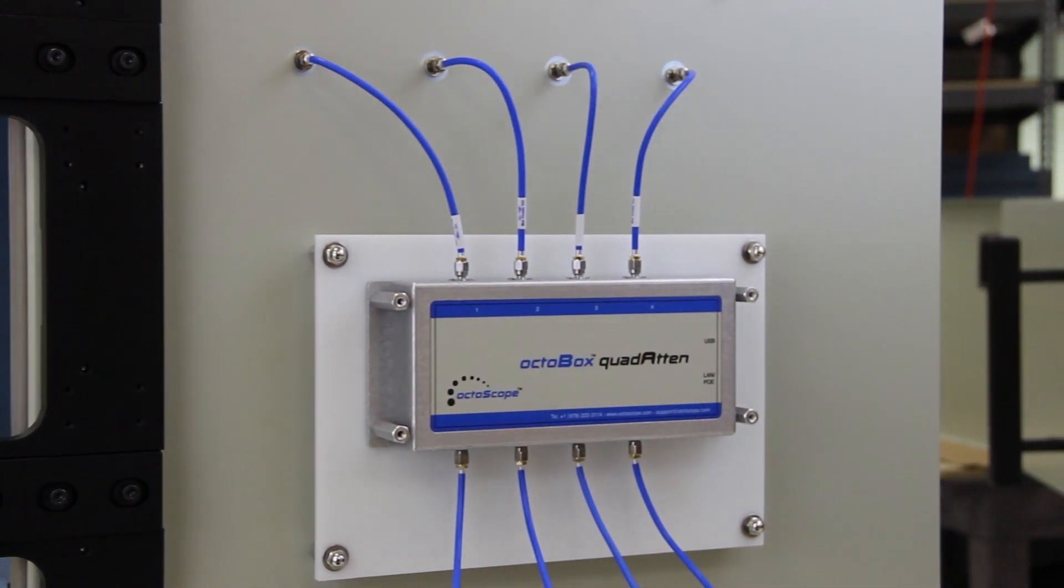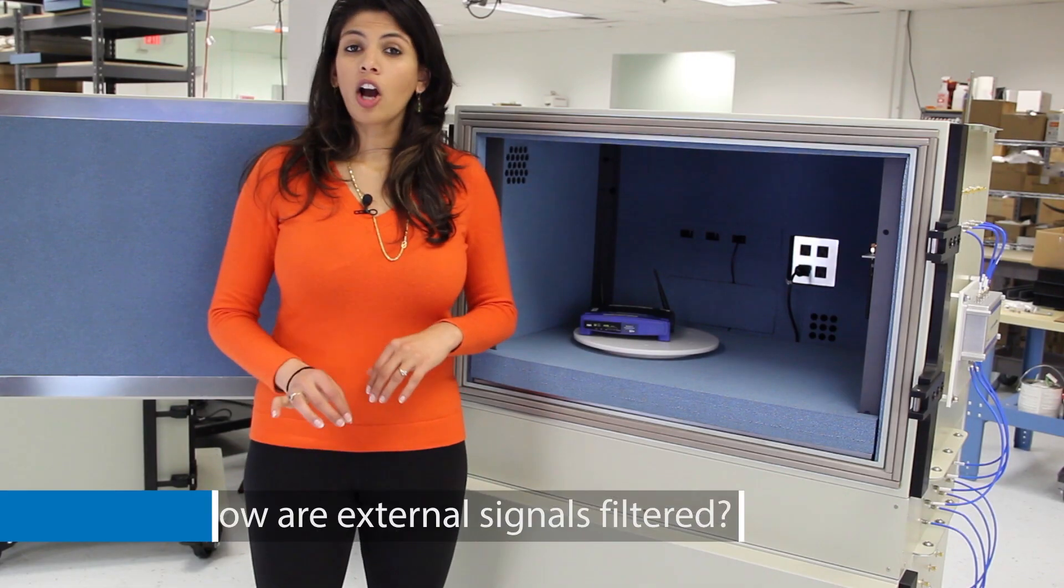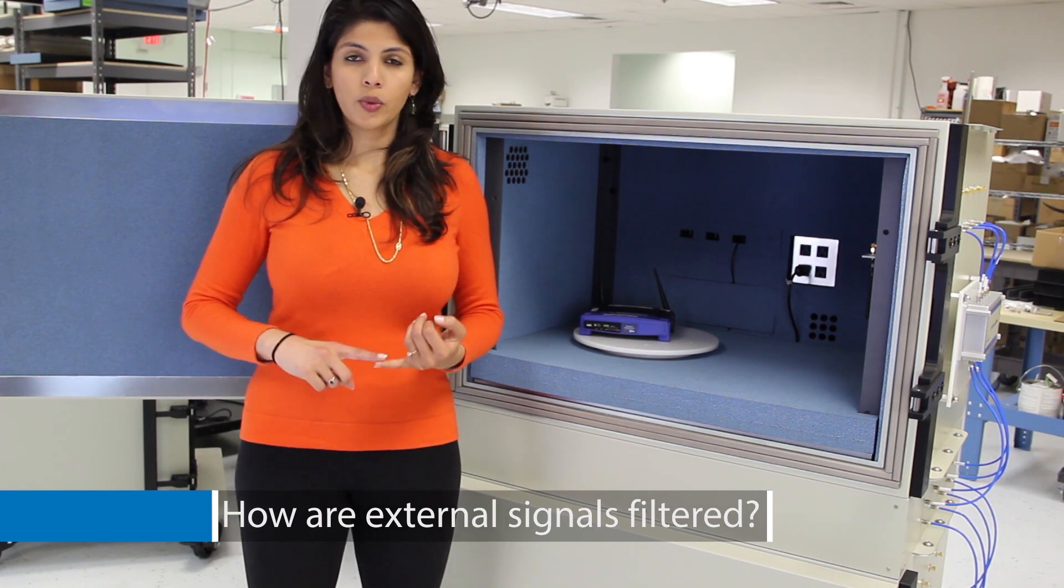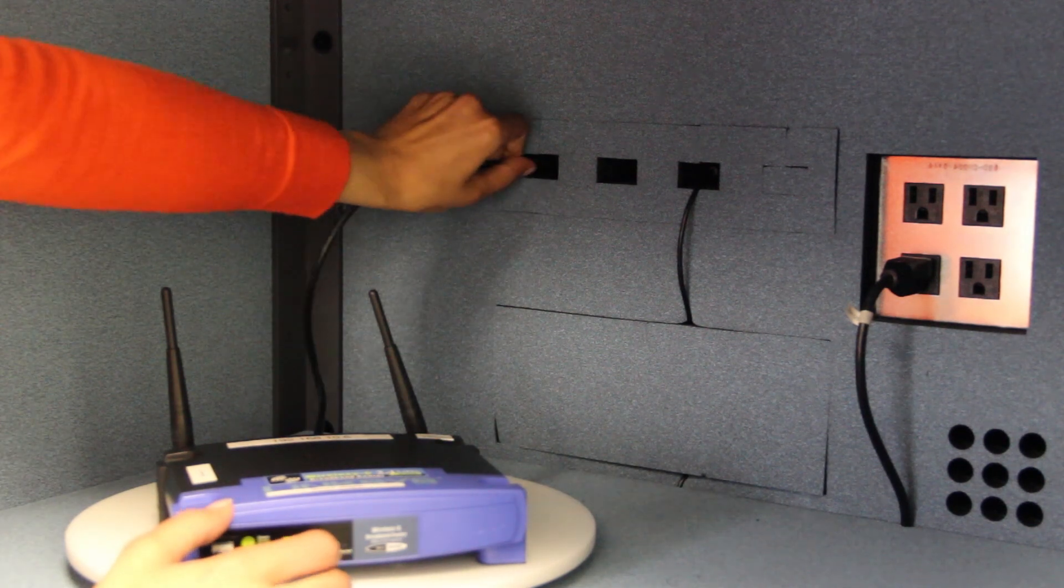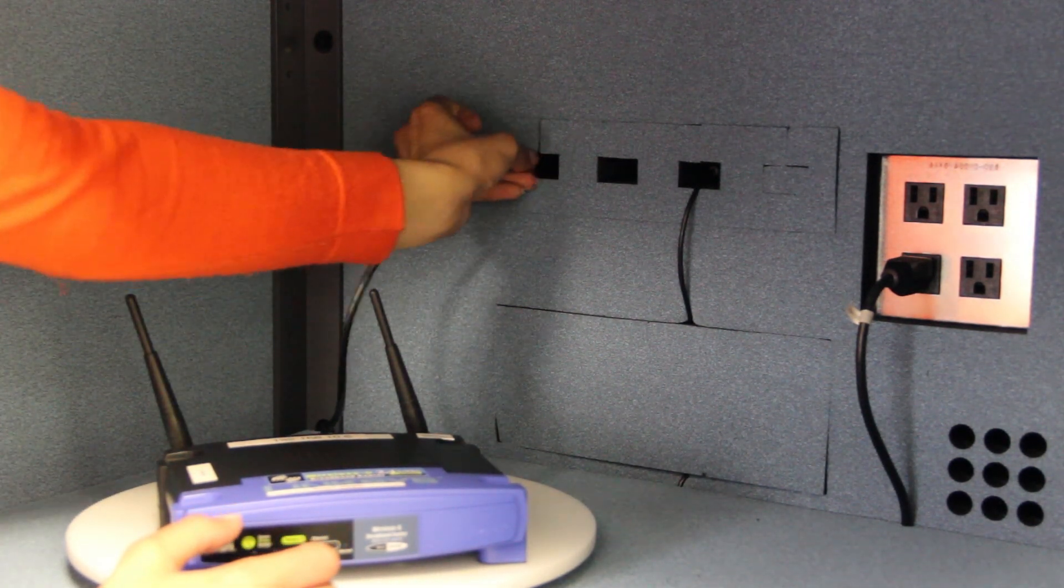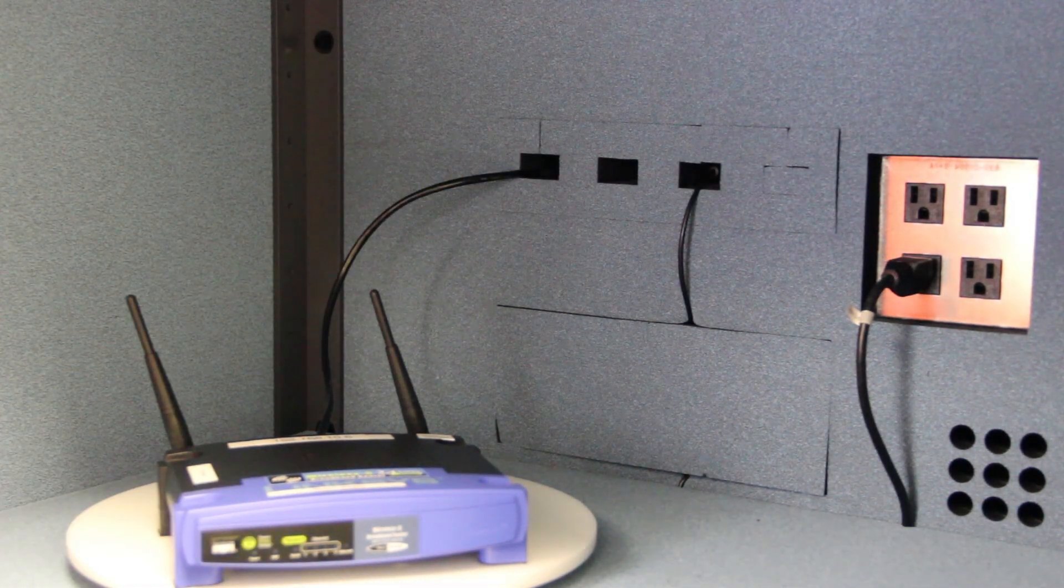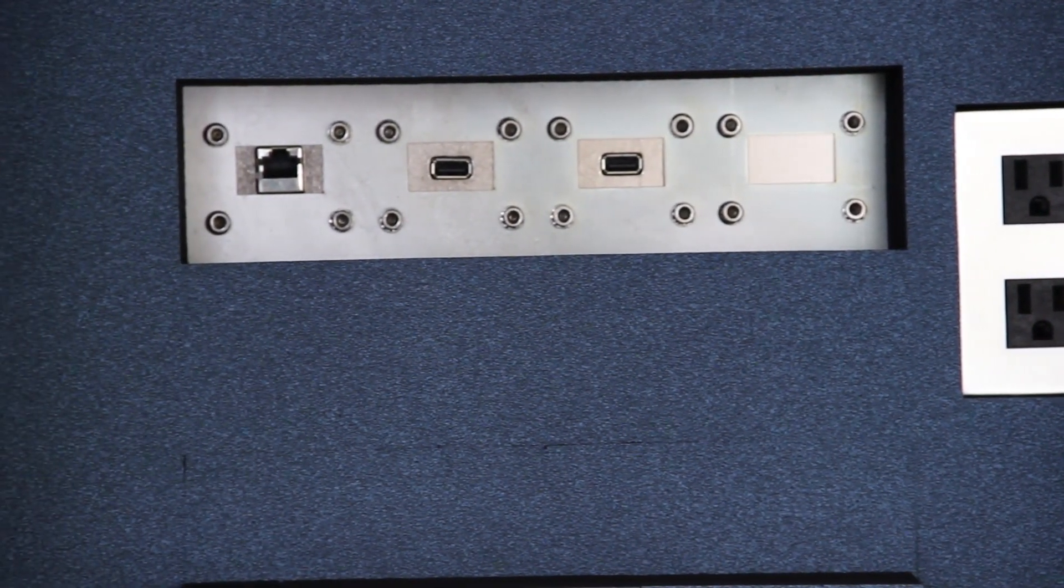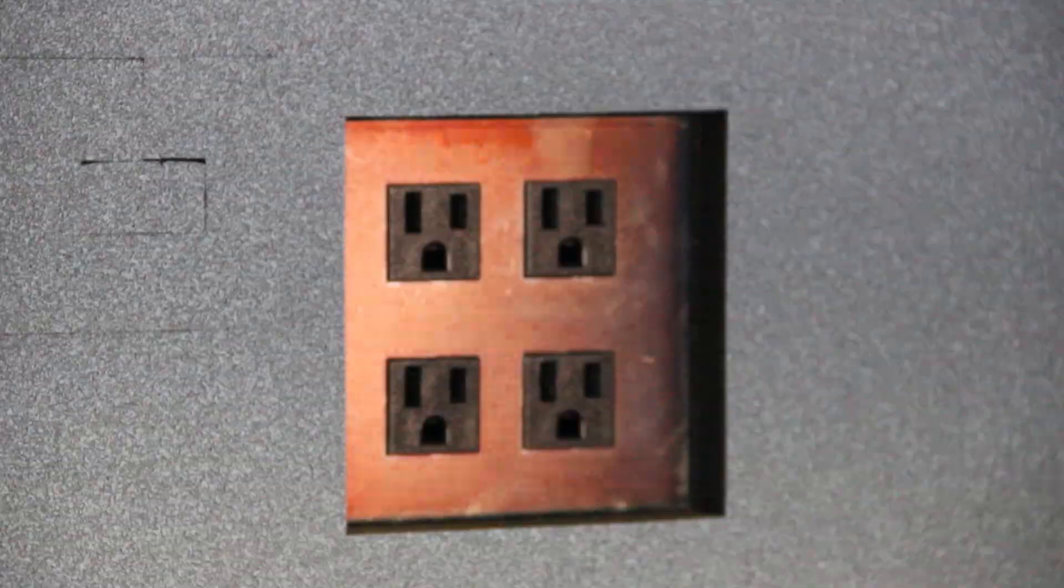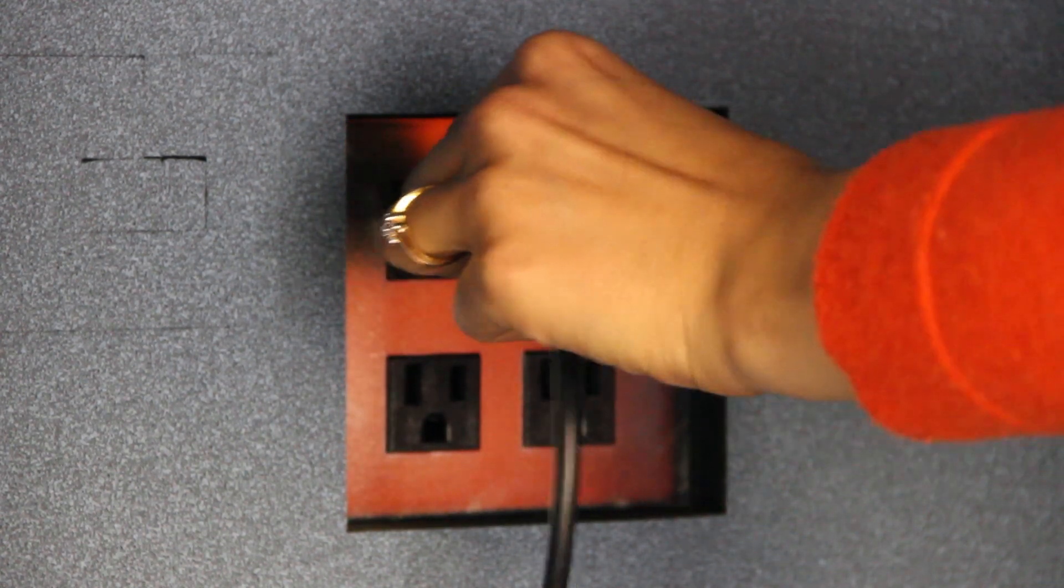Any copper wires such as USB, Ethernet, HDMI, etc. can act as antennas coupling interference between the outside and the test environment. Any copper cables entering the Octabox enter through filters. Power and ventilation are also filtered.